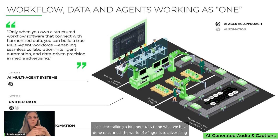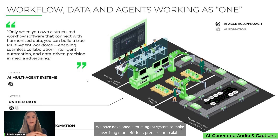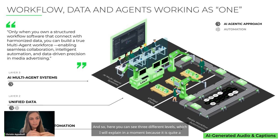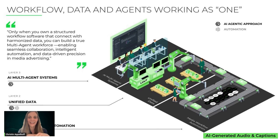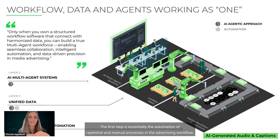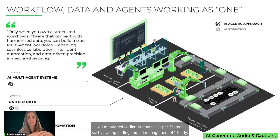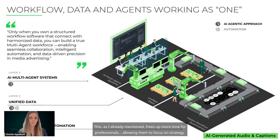Let's talk about what we have done at Mint to connect the world of AI agents to advertising. We have developed a multi-agent system to make advertising more efficient, precise, and scalable — structured across three different levels. The first level is the automation of repetitive and manual processes in the advertising workflow. AI optimizes specific tasks such as ad uploading and bid management efficiently, freeing up more time for professionals to focus on strategy.